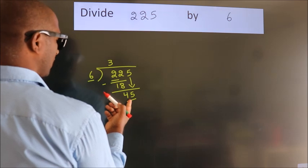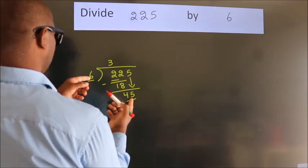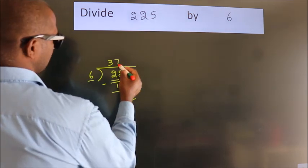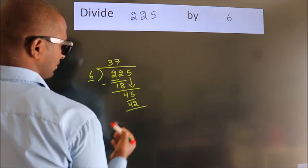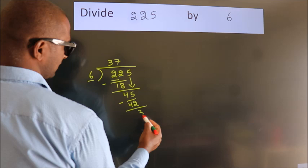A number close to 45 in sixth table is 6 sevenths 42. Now we subtract. We get 3.